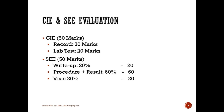The continuous internal evaluation or CIE carries 50 marks. It is split into 60 percent for journal writing — that is your record — and 40 percent for the lab test. Each experiment write-up is evaluated, and a final test is to be conducted by the department.